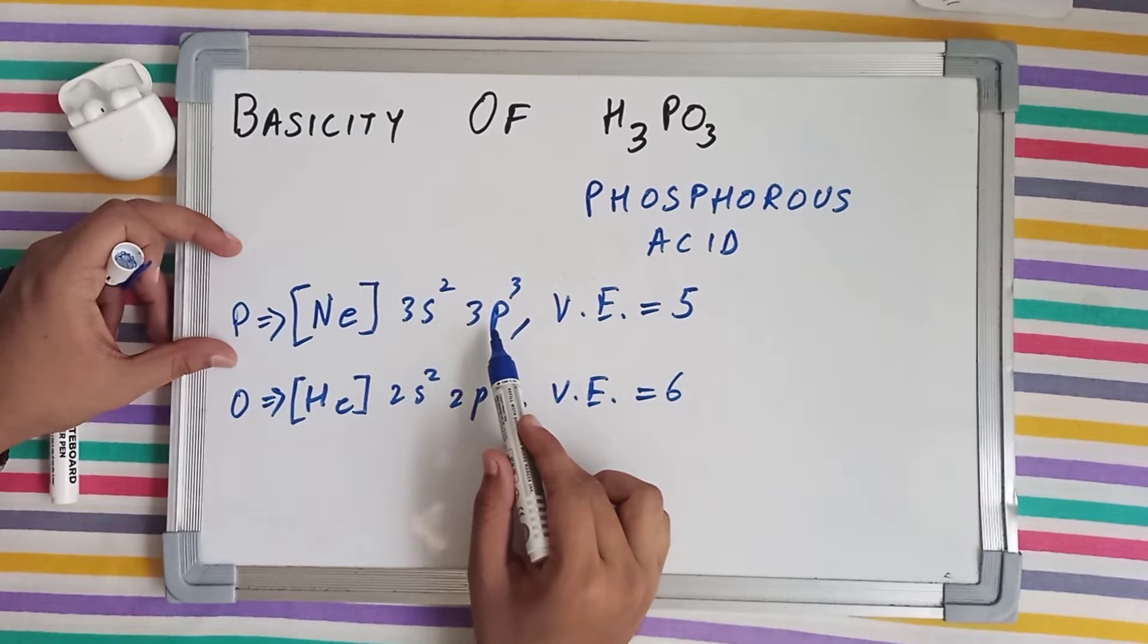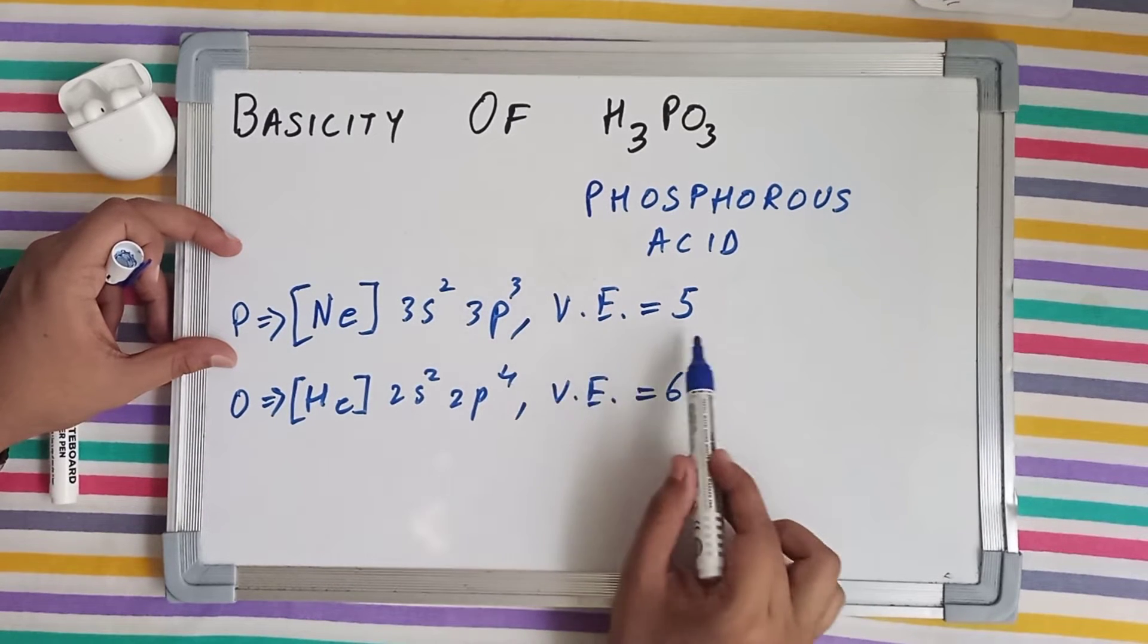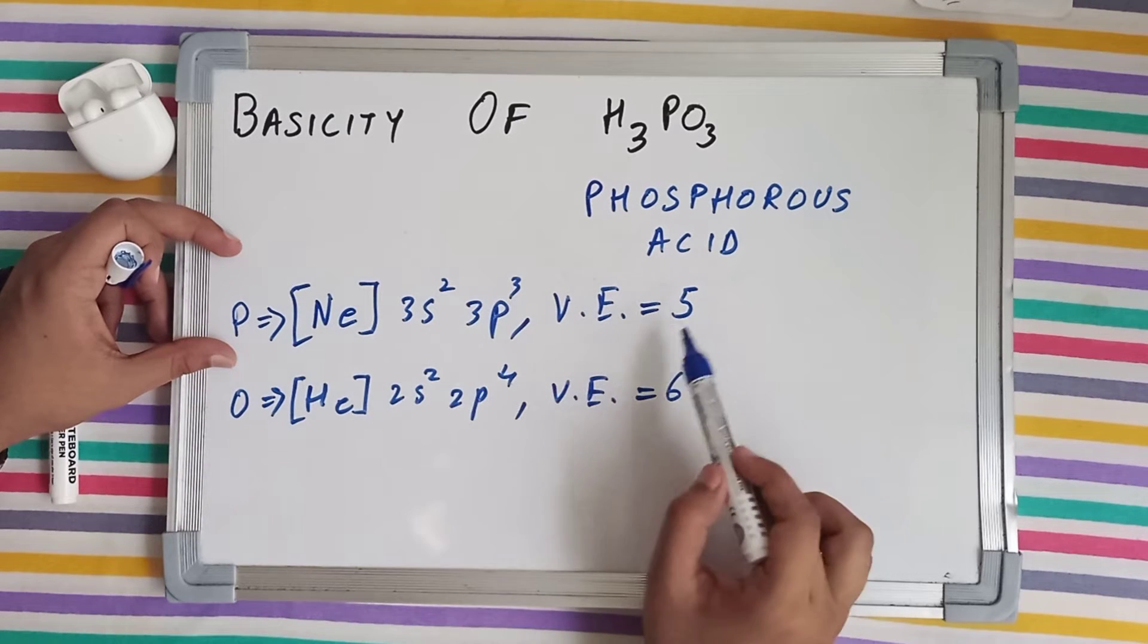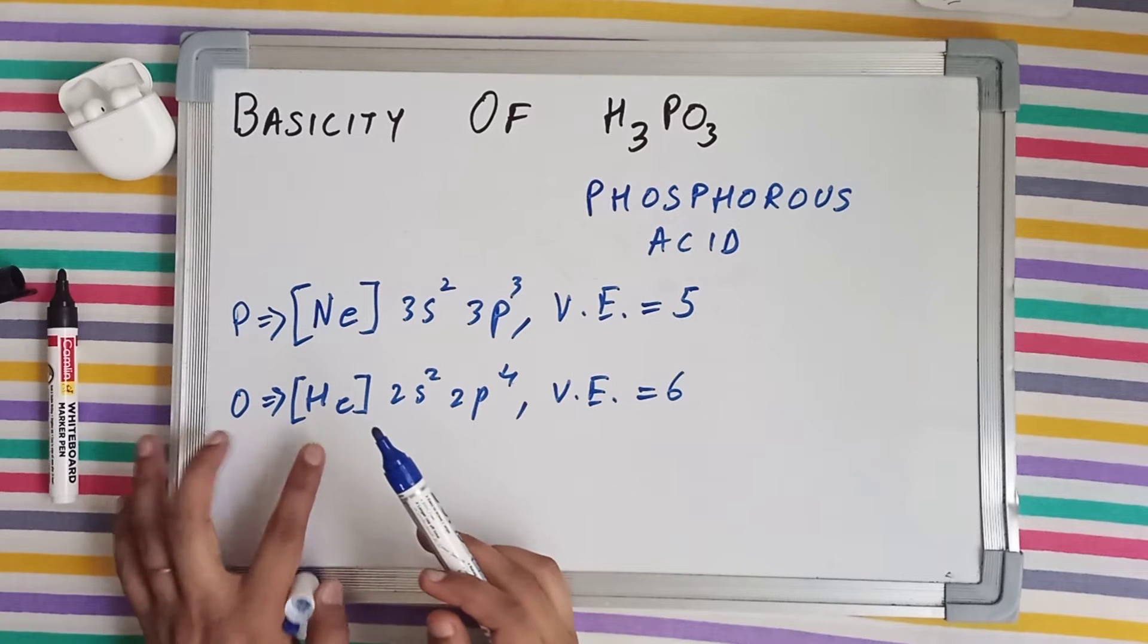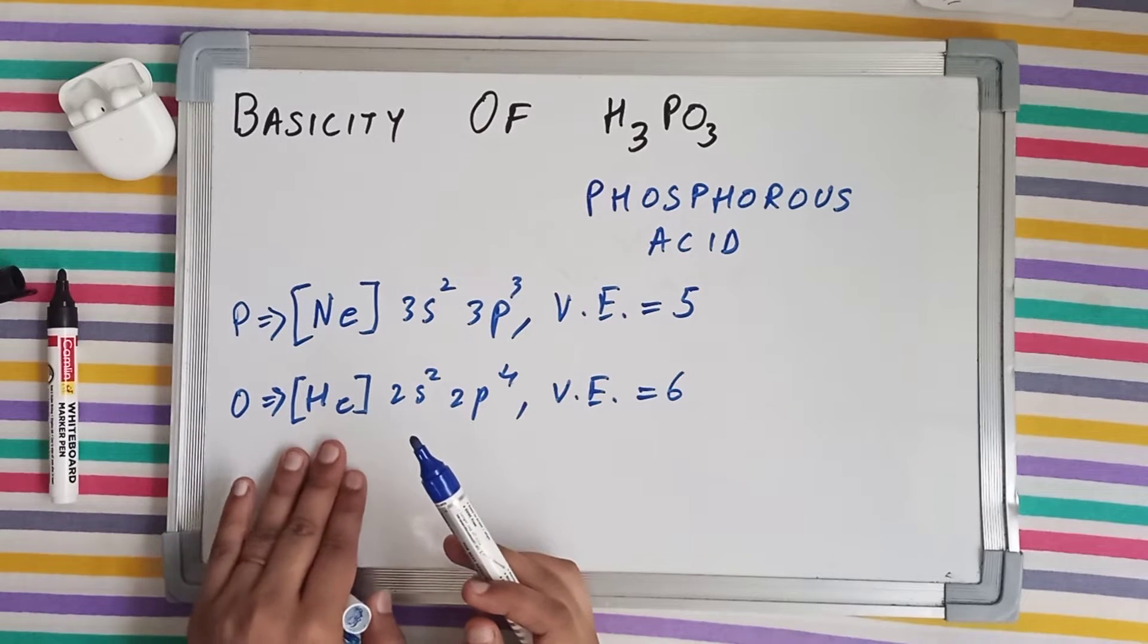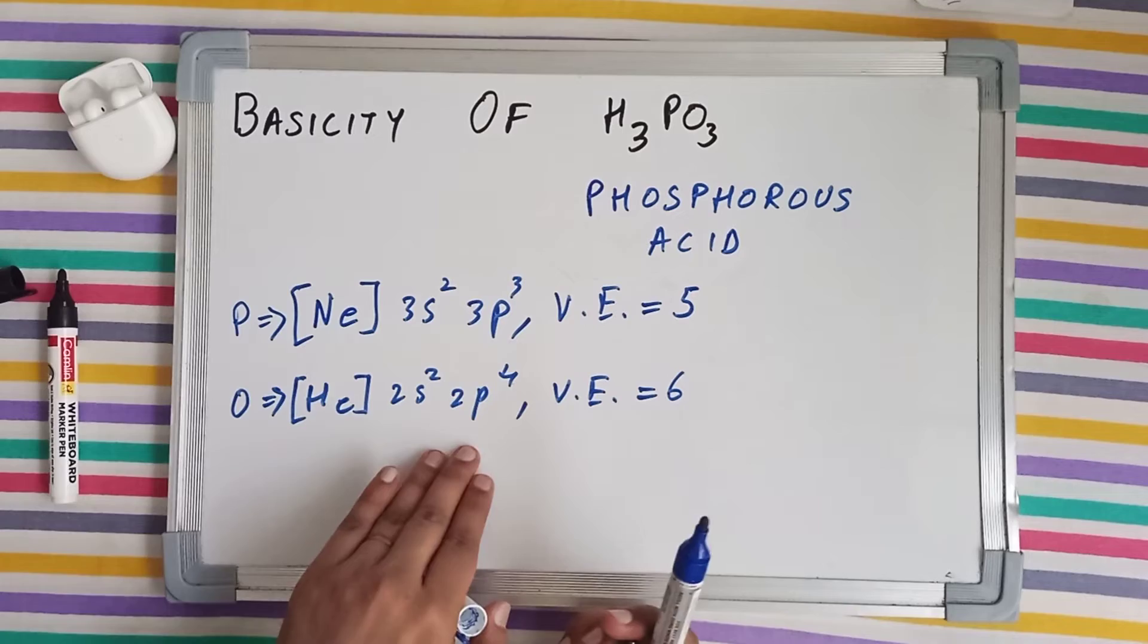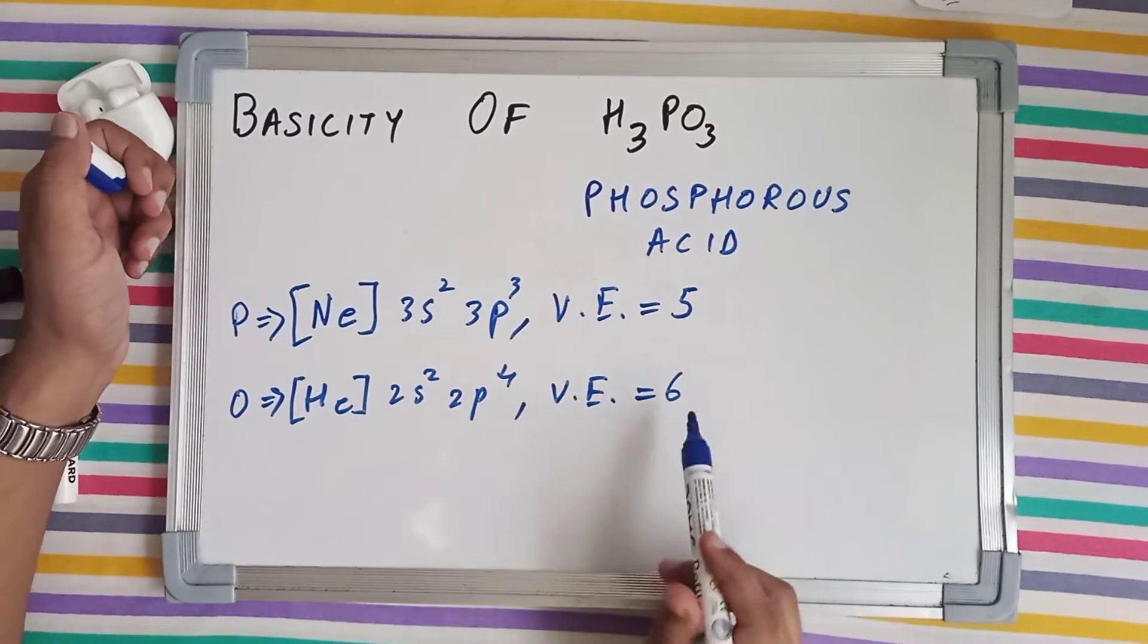Our valence electrons come out as 2 plus 3, which is 5. Now coming to oxygen, the inert configuration of helium and then 2s² 2p⁴. Our valence electrons come out as 6, 2 plus 4 equals 6.